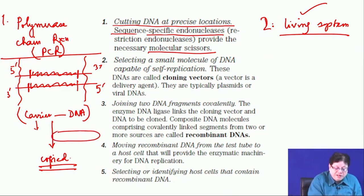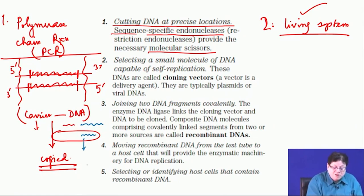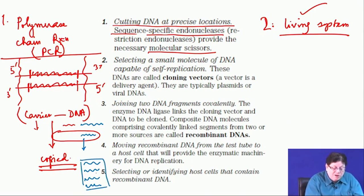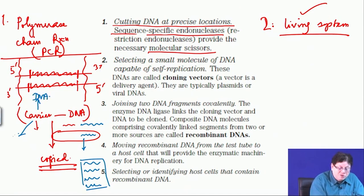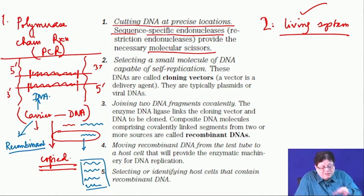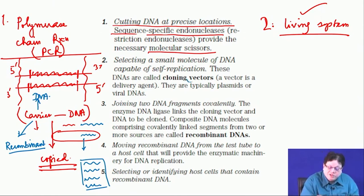The carrier has a property that allows it to be copied when put inside a bacterial cell. When the bacterial cell grows, each cell contains this carrier DNA hybrid. This is called recombinant DNA — the carrier molecule is DNA and the insert is also DNA. The carrier is also called a cloning vector.